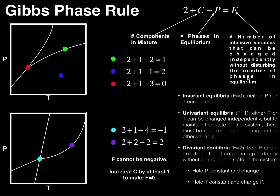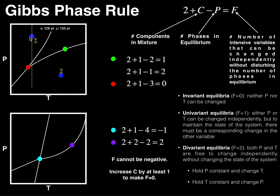To summarize: F equals zero (invariant) generally means you're on a triple point. F equals one (univariant) means you're on a simple boundary line between two phases. F equals two (divariant) means you're in the dead center of one of the phase areas. This is pretty much always true for a one-component system.